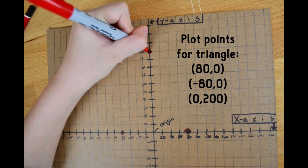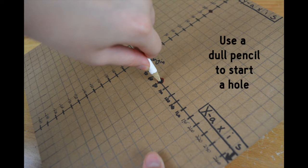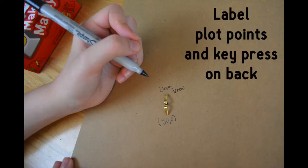Plot these three points to make a triangle. Use a dull pencil to start a hole, but don't poke all the way through yet. Instead use a brass fastener to go all the way through. And on the back, make sure you label the key press that you just plotted.